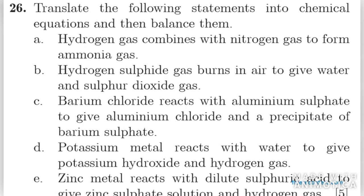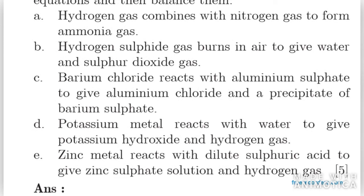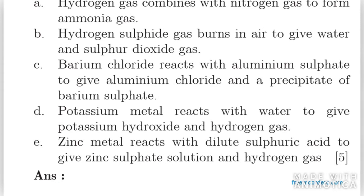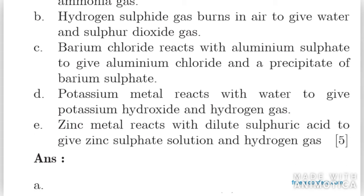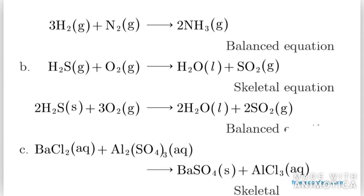In question number 26, you have to translate the following statements into chemical equations and then balance them. First, hydrogen gas combined with nitrogen gas to form ammonia gas. You first write the skeletal equation: H2 + N2 → NH3. Then balance it. The balanced equation is: 3H2 + N2 → 2NH3.